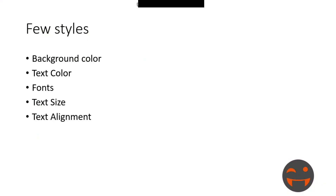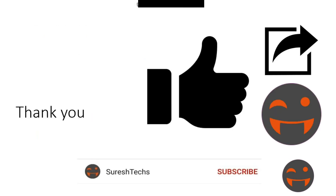This covers the basic styles — background color, text color, font size, and text alignment. Next we will look at CSS classes and the CSS tutorial. That's all for today. Please do subscribe to Suresh Tech. Thank you so much, friends!